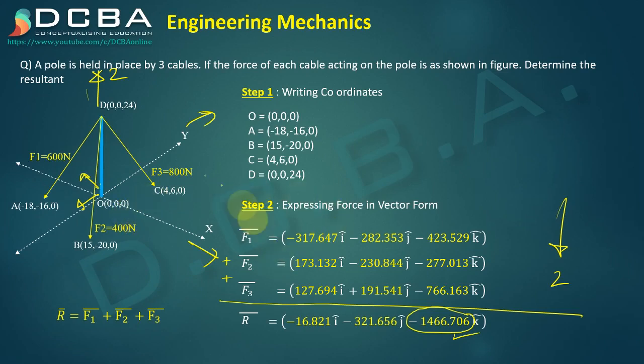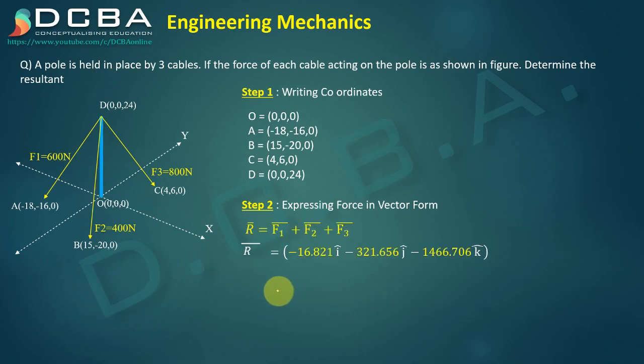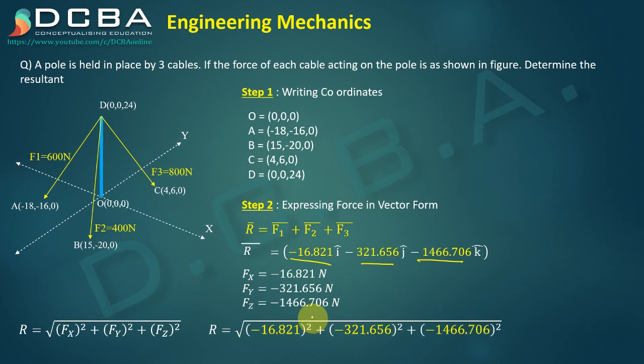And again in y we are getting 321.656, so we can say that this pole is also getting slightly towards negative y axis. So it is slightly inclined towards negative y axis also. So what we can do now is find the direction cosines. But before that we did not find the resultant, right? Resultant R is under root of fx² + fy² + fz², which is 1501.66 newtons.